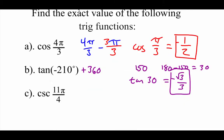Here in our last example, we've got the cosecant of 11π over 4. Now this one's a lot like that last one, where this angle is a little bit too big to work with, so what I'm going to do first is subtract off a rotation. I'm going to subtract off 2π to help me find a coterminal angle. We're going to need common denominators, so I'm going to make this 8π over 4.